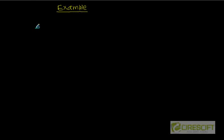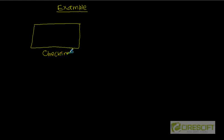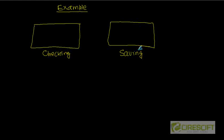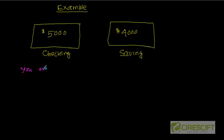Let's take another example. Assume you have two bank accounts: a checking account and a saving account. You have five thousand dollars in your checking account and four thousand dollars in your saving account. You are told to transfer one thousand dollars from checking to your saving account.